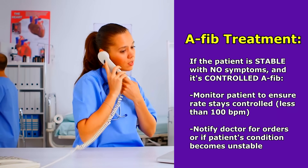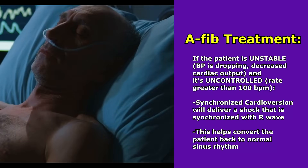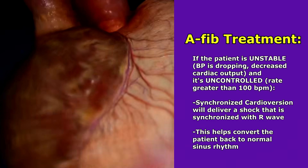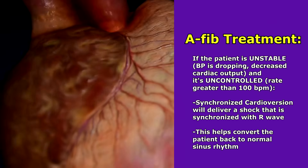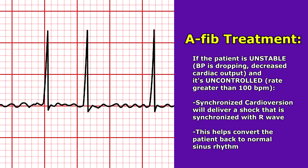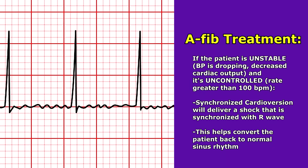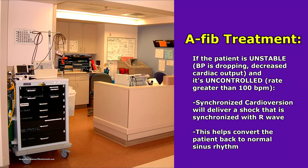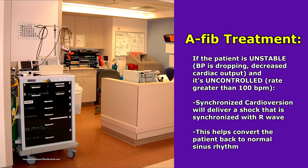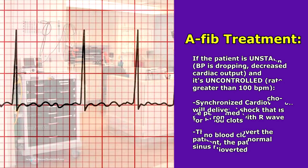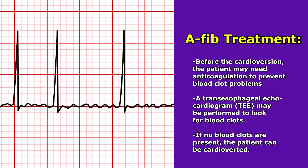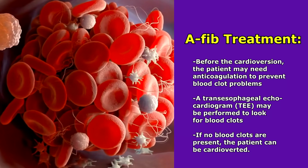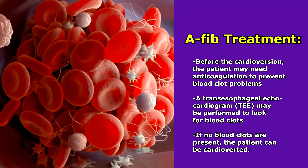If the patient is unstable — their blood pressure is dropping, they have decreased cardiac output, the heart is just not able to maintain perfusion, and they have an uncontrolled rate — they're going to need a procedure called a synchronized cardioversion. A cardioversion delivers a shock synchronized with the patient's R-wave to convert them back to normal sinus rhythm. Before the cardioversion, you want to know how long the patient has been in AFib, because they may need anticoagulation prior to the procedure to prevent blood clot problems.